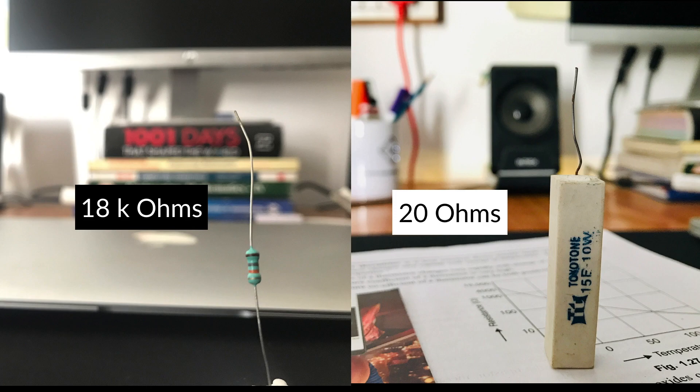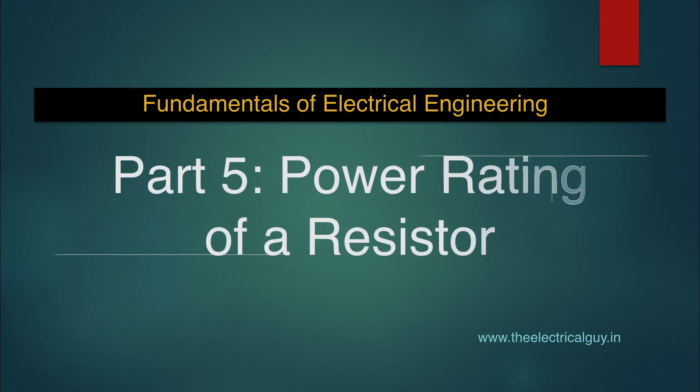In this video, you will be able to understand why the size of an 18 kilo ohm resistor is way too small than a 20 ohm resistor. So to get the answer and to understand the power rating of a resistor, I will recommend you to watch the video.